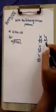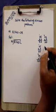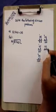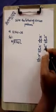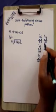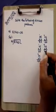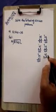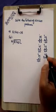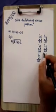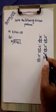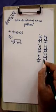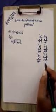Five threes are fifteen plus two is seventeen, so 35 × 5 = 175. Again, 35 multiplied by six: six fives are thirty, write zero carry three; six threes are eighteen plus three is twenty-one, so 35 × 6 = 210. Now 35 multiplied by seven: seven fives are thirty-five, write five carry three; seven threes are twenty-one plus three is twenty-four, so 35 × 7 = 245.